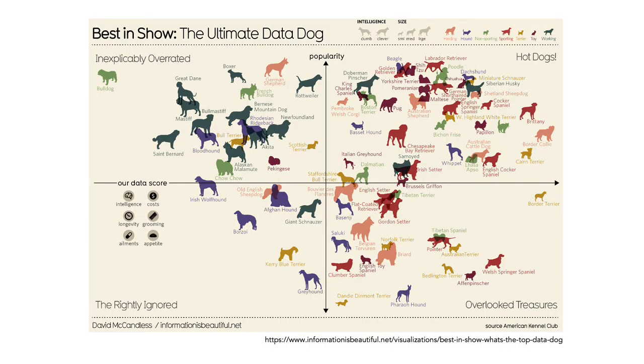Let's consider some other plots then. This one is by David McCandless, who is well known for making clear and engaging graphics. On the x-axis, he shows the data score for various breeds of dog. That score is based on their intelligence, the cost of having them, longevity, the need for grooming, ailments, and appetite. On the y-axis, he shows the popularity of the dog breeds. The various quadrants show things like dogs that are overrated or overlooked treasures. David could have plotted these with symbols, but he's instead used outlines of the dog breed, so it's very clear what breed you're looking at. Most people look at this particular image and think that this plot is very easy to read and very engaging.